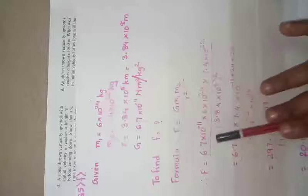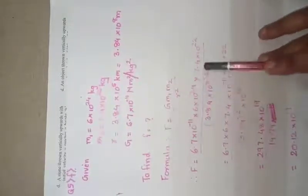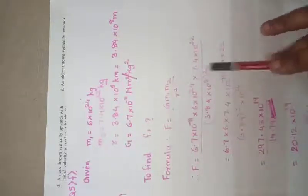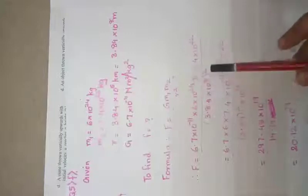Substituting all the values given here, we have 6.7×10⁻¹¹ × 6×10²⁴ × 7.4×10²² divided by (3.84×10⁸)² as r is squared.